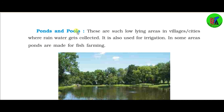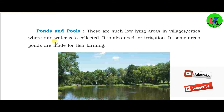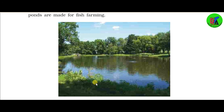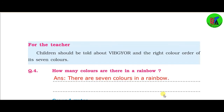Next are ponds and pools. These are low-lying areas in villages and cities where rain water gets collected. Pond water is also used for irrigation. In some areas, ponds are made for fish farming. Here is a picture of a pond.